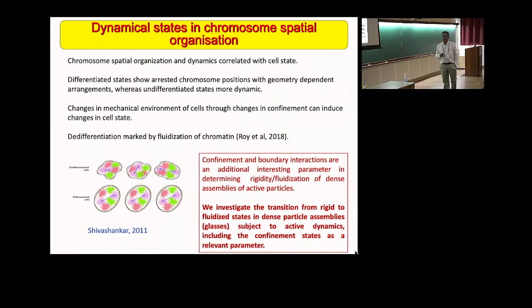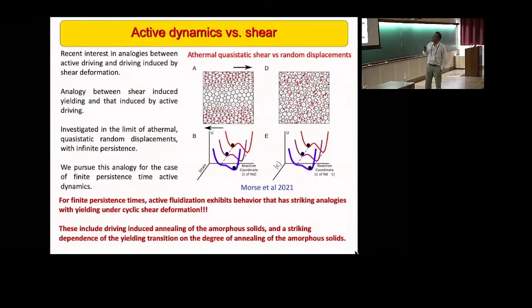The main point for us to take from this is that confinement and boundary interactions are an additional interesting parameter in determining the transition from rigidity to fluidization in dense assemblies of active particles. That is in addition to the strength of the active force and the persistence of these active forces. So with that in mind, we investigate the transition from rigid to fluidized states in dense particle assemblies subjected to active dynamics, including the confinement states as a relevant parameter.